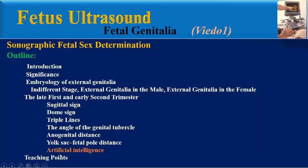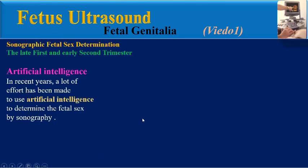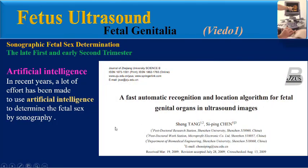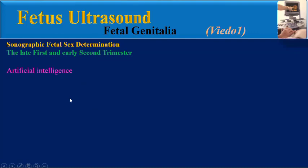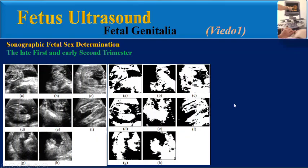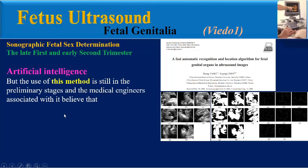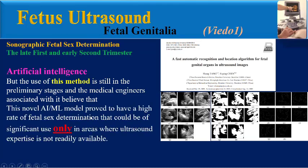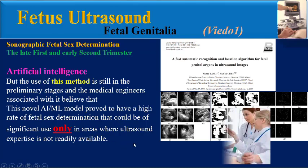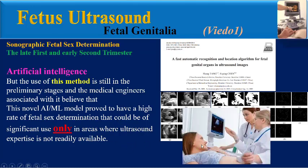The use of artificial intelligence in fetal sex determination: In recent years, significant efforts have been made to use artificial intelligence to determine fetal sex by sonography using special algorithms. However, use of this method is still in preliminary stages, and researchers believe this model could be of significant use only in areas where ultrasound expertise is not readily available.